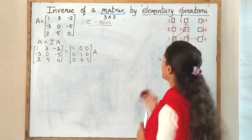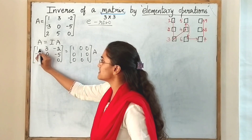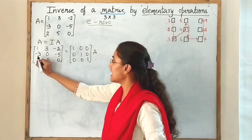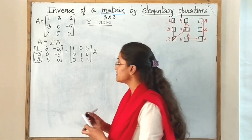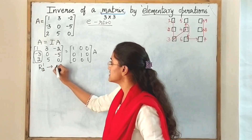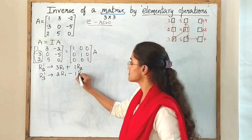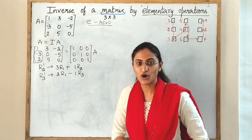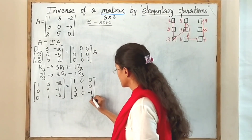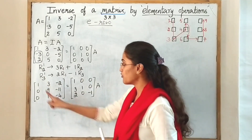Now applying the same pattern for this given matrix. The first step is making the first element as 1. Here in this matrix it is already 1. Now making these two elements as 0, I shall apply the operations — I shall change R2 and simultaneously also change R3. After applying these operations, we get a result where the first column has successfully become 1, 0, 0.